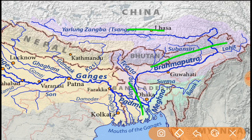In India, it flows through the state of Assam, and the other state is Arunachal Pradesh. In the same state, it is known as the Arjun river.